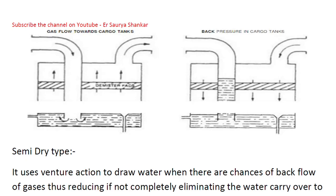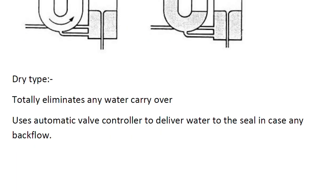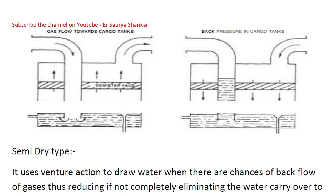Looking at the diagram, it consists of a chamber filled with water and two pipes for inlet and outlet of flue gases, while another two small pipes denote inlet and outlet for sealing water. There is a demister pad to remove water droplets from the gas. The two diagrams show conditions where the inert gas is flowing from the plant to the distribution area, and where back pressure tends to push cargo gases into the IG system and is prevented by the water seal.